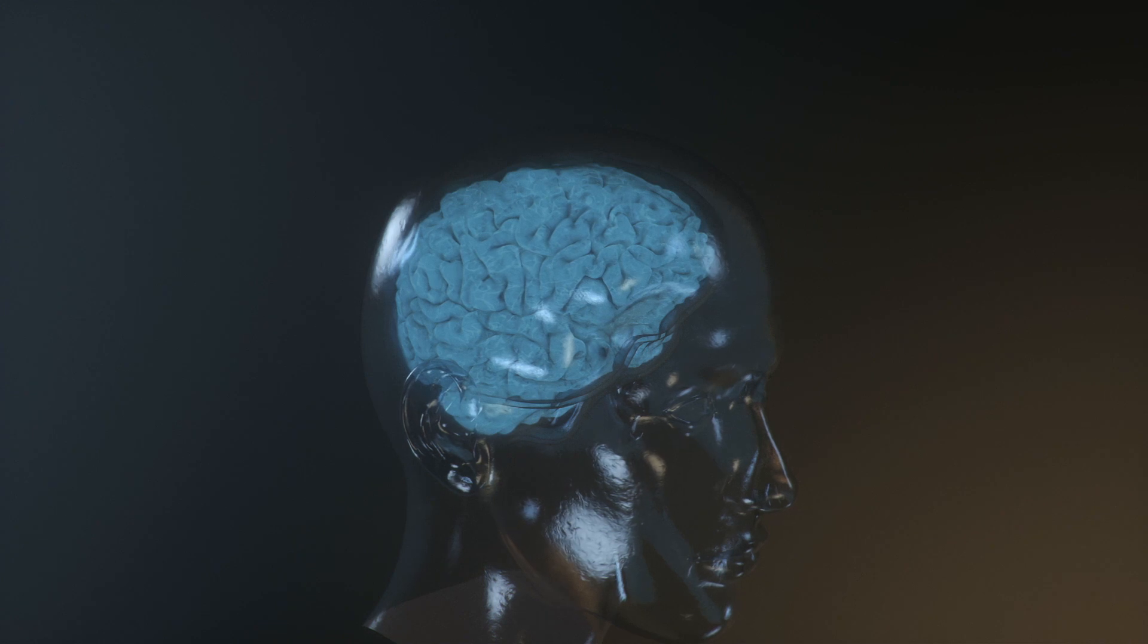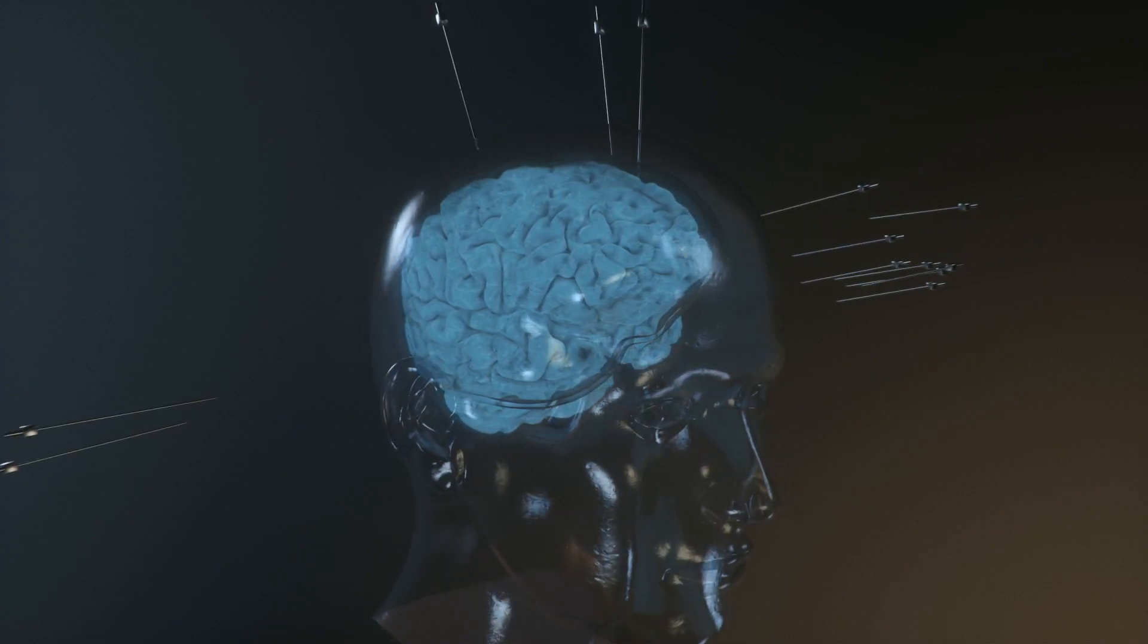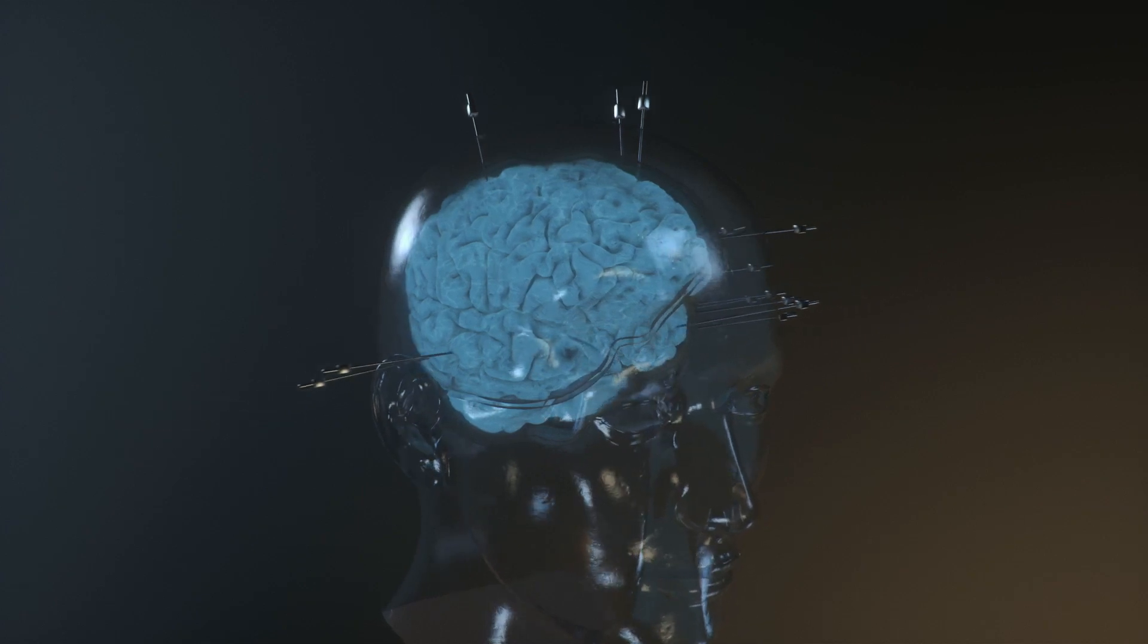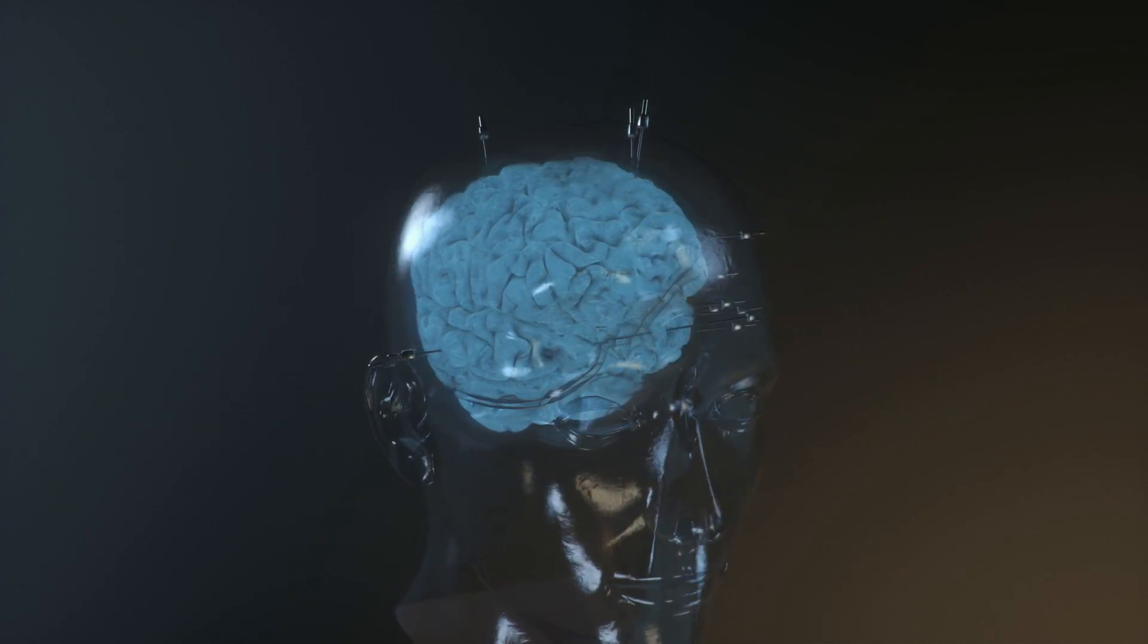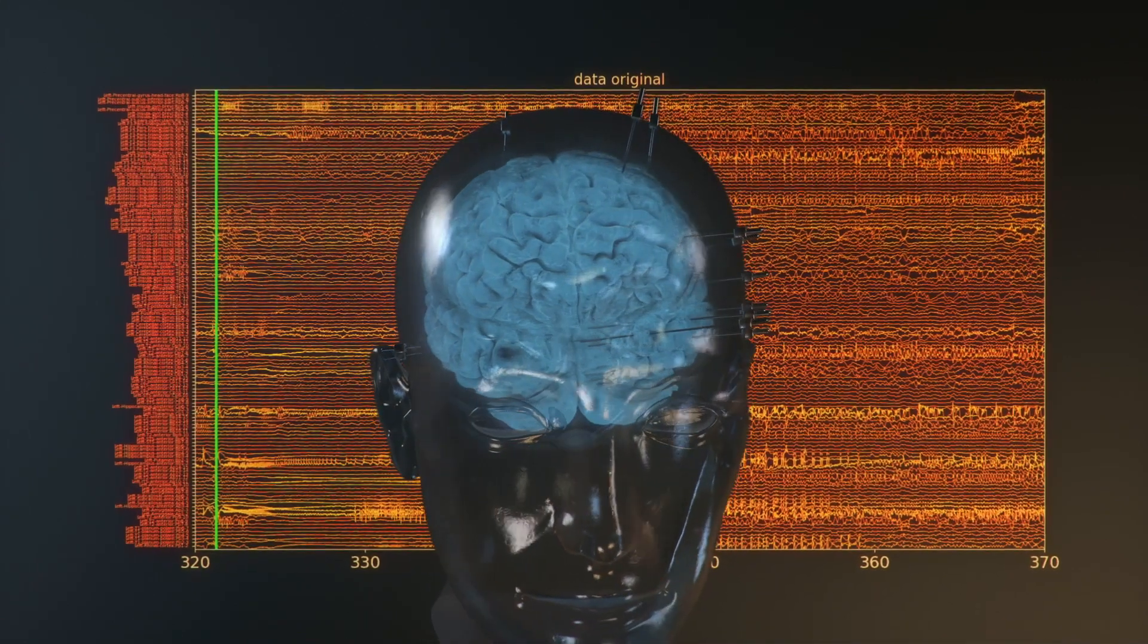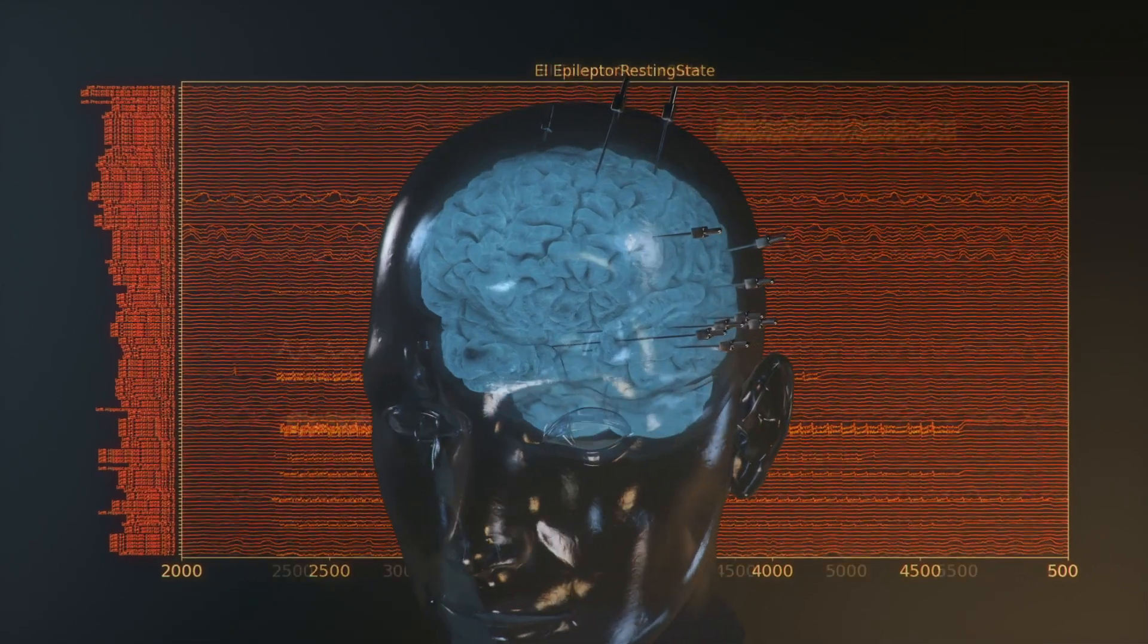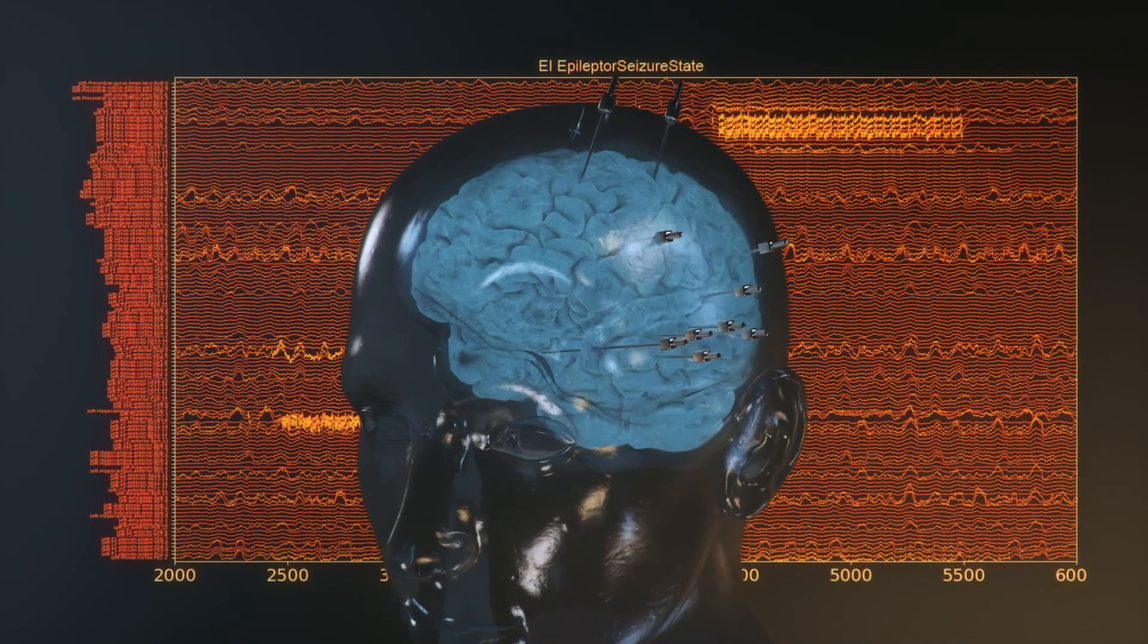The process to locate the epileptogenic zone starts with stereotactic electroencephalography, the so-called SEEG, that records neural activity directly in the brain. Comparing the empirical brain signals to a range of simulations can narrow down the potentially affected regions of the brain.